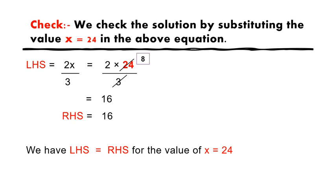So we get 2 into 8. 2 eights are 16. And our RHS is also 16. So we have LHS is equal to RHS for the value of x is equal to 24.